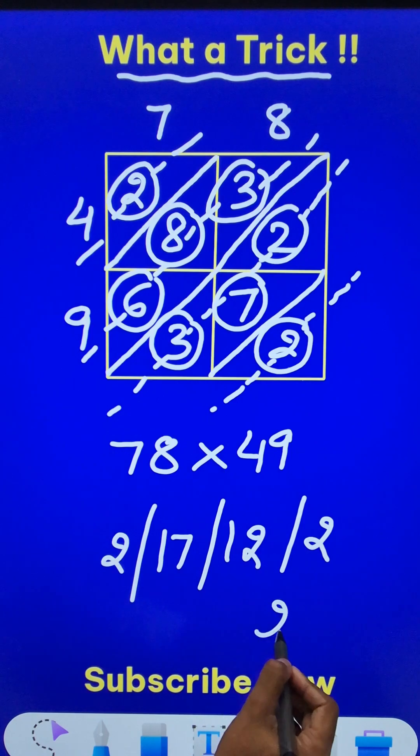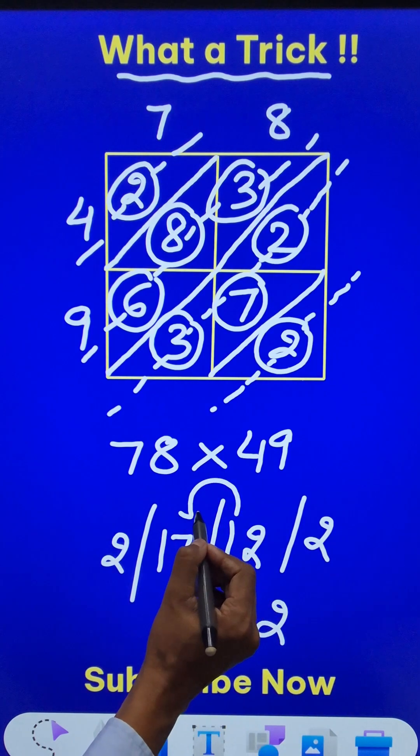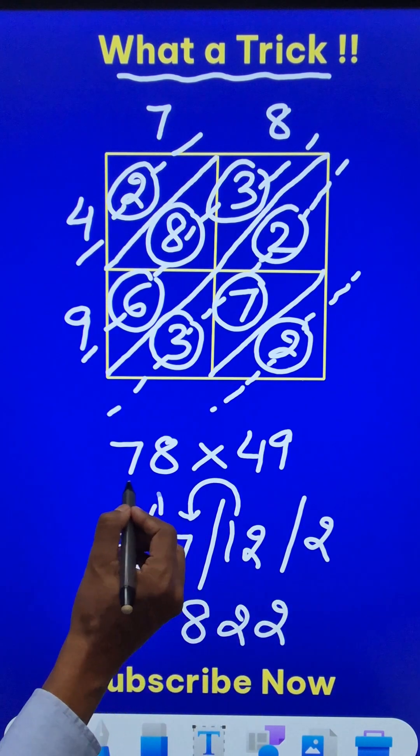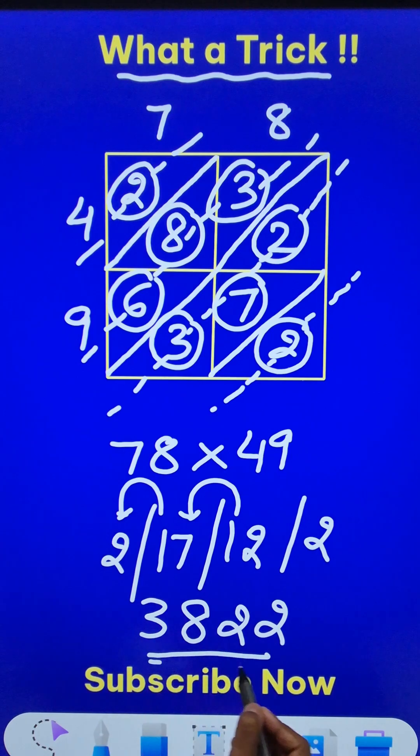Now, start writing from the unit digit 2. 12 means 2 and a 1 carry, so this becomes 18. 8, 1 carry, so this becomes 3. And now, pick up the calculators and check your answer. 78 times 49. Is it 3822? Thank you very much.